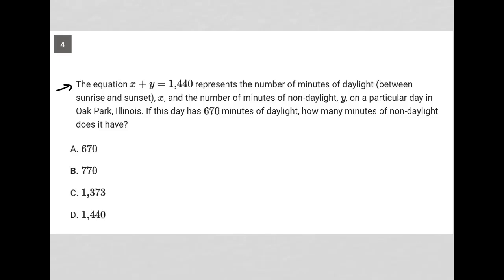So this question says the equation X plus Y equals 1,440 represents the number of minutes of daylight between sunrise and sunset, X, and the number of minutes of non-daylight, Y, on a particular day in Oak Park, Illinois.